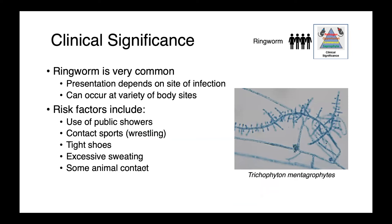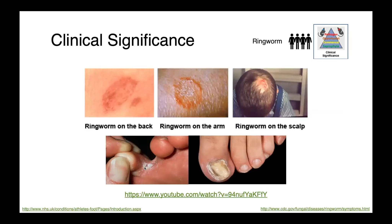Ringworm is a very important zoonosis, and contact with animals is a great way to get these infections. Here you can see some images from the U.S. Centers for Disease Control and the National Health Service in the U.K. showing what ringworm can look like — classical reddened erythematous lesions on the skin. We can have ringworm on the scalp, again associated with alopecia, and dermatophytes are also responsible for athlete's foot and nail bed infections.